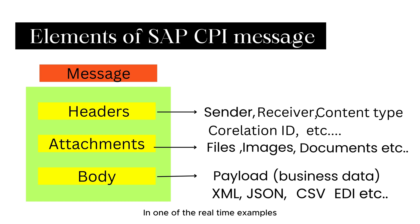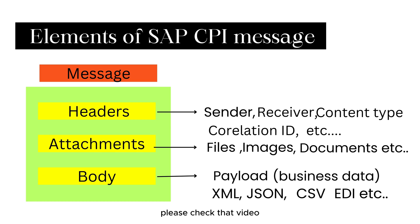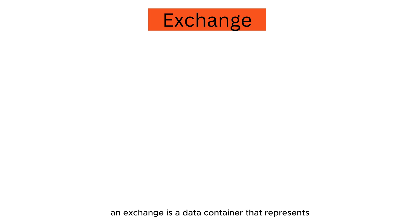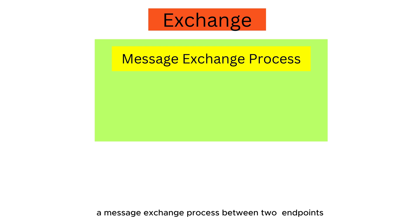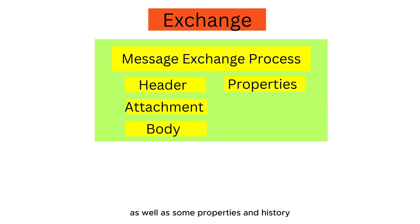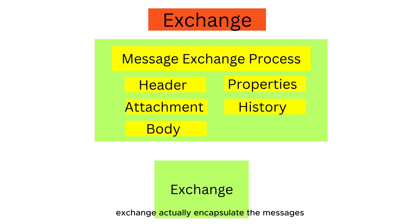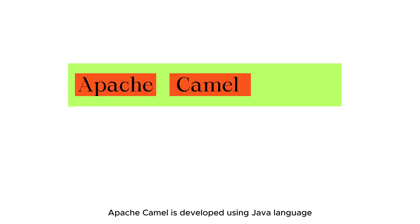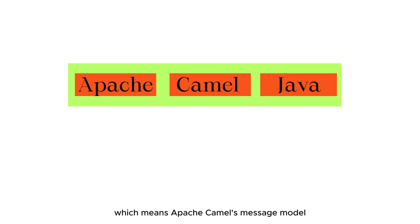Attachments are optional data that can be attached to the message such as files, images, documents, etc. In one of my real-time examples I already covered how you can handle attachments in an email server using Groovy scripting — please check that video. The last element of the SAP CPI data model is exchange. An exchange is a data container that represents a message exchange process between two endpoints.